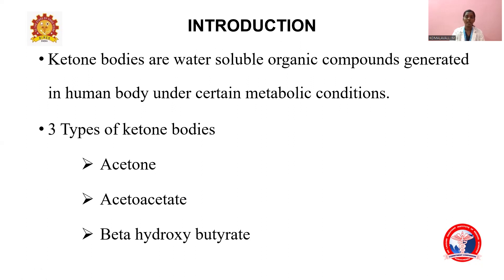To start with the introduction: ketone bodies are water-soluble organic compounds produced in the human body under certain metabolic conditions to give energy. There are three types of ketone bodies synthesized: first is acetone, second is acetoacetate, and third is beta-hydroxybutyrate.